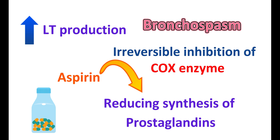However, this bronchospasm is not observed in all people — only in those who are sensitive to aspirin. Not only aspirin, but a few other painkillers can also produce bronchospasm due to inhibition of the COX pathway. Importantly, Montelukast cannot completely relieve the bronchospasm produced by aspirin. Therefore, while using Montelukast, if you are sensitive to aspirin, try to avoid aspirin or any other NSAIDs which may induce bronchoconstriction.